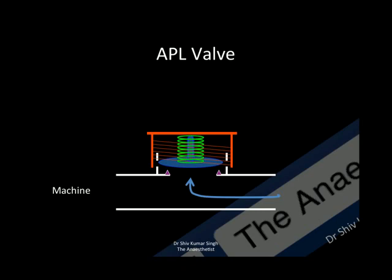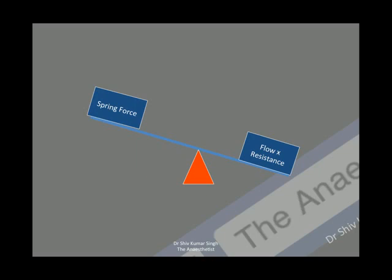This pressure acts on the disc, and the force acting over the disc area supplied by the spring creates a pressure which must be balanced by the pressure created by the expiratory flows. When the pressure generated by the fluid flow exceeds the pressure generated by the spring on the disc, the disc will be lifted up and the gases will be vented out. Essentially, the spring force on the diaphragm is balanced by the flow of expired gases and the resistance within the tubing.